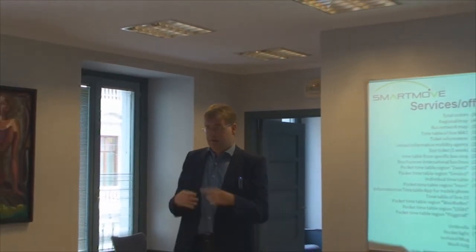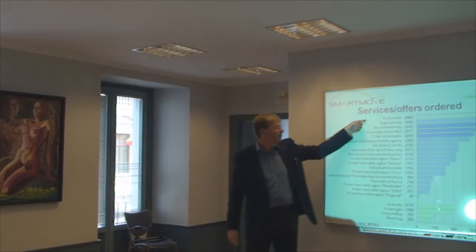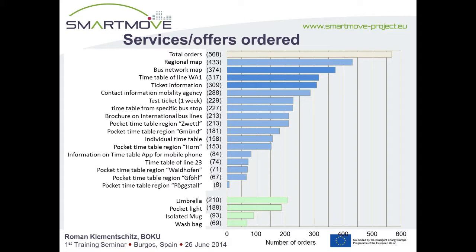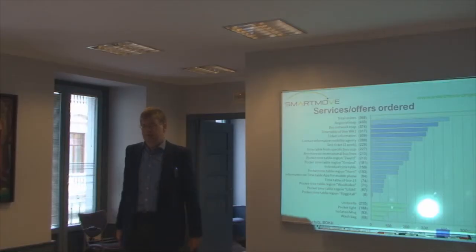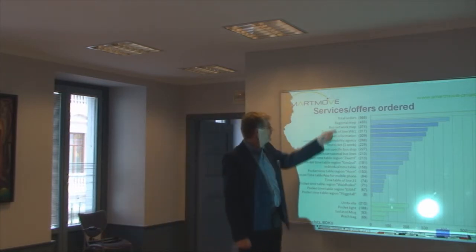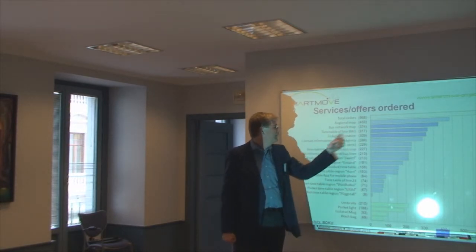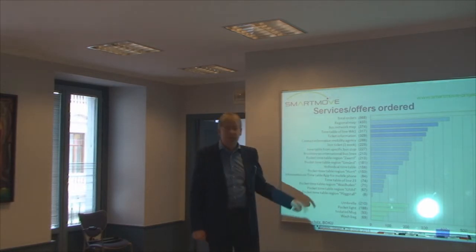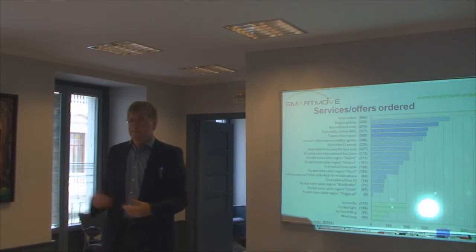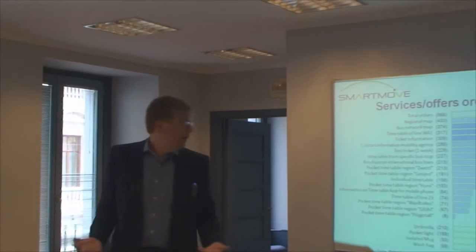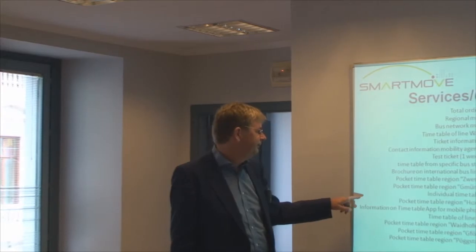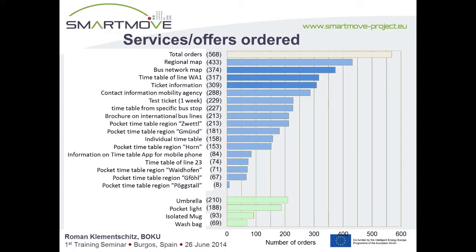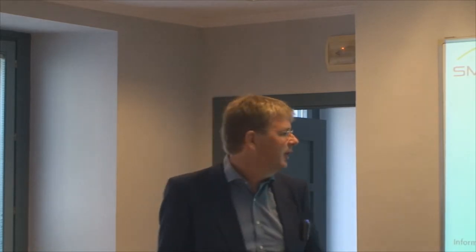All people who were interested received a short questionnaire with items they could pick based on what they wanted. We had 568 wish lists returned from people in the region. The distribution included the regional map, the bus network map, and timetables of specific lines — all things we offered in the list. In the preparation phase, you have to collect all this data and clarify what you can offer. We also offered individual timetables, asking people for their starting point, end point, and a timeframe within which we could work out a personal timetable.